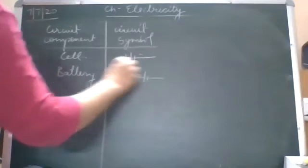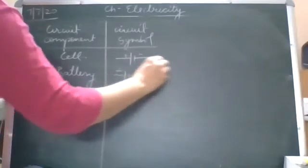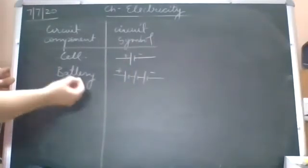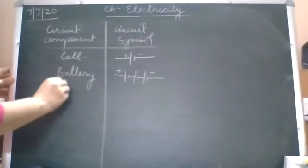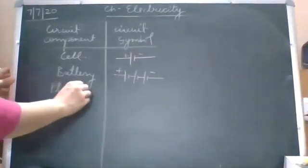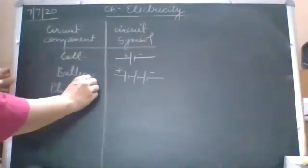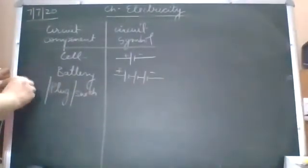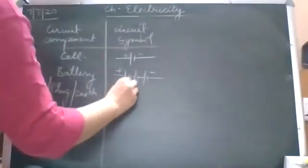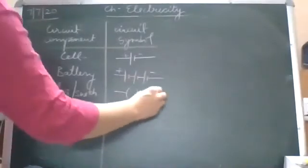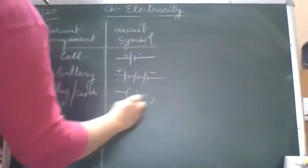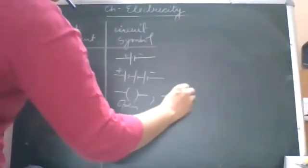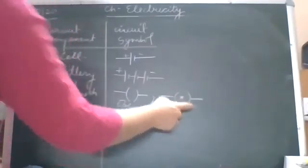Then comes the plug key or switch. If the circuit is open, it will be shown as an open key symbol. If it is closed, it will be shown as a closed key symbol.